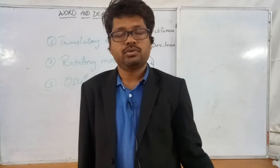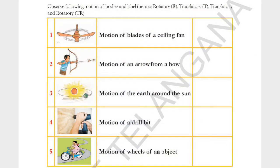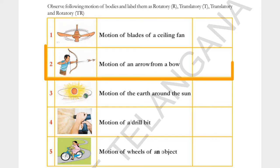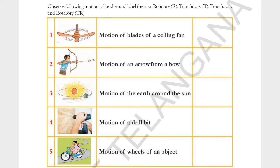A table will be displayed on the screen — please observe and write the type of motion that each object possesses. Motion of blades of a ceiling fan: the blades move with respect to a center point in a circular path, so the motion of blades of a ceiling fan is rotatory motion. Motion of an arrow shot from a bow: it moves in a straight line, all parts of the arrow move in the direction of movement, so that is translatory motion.